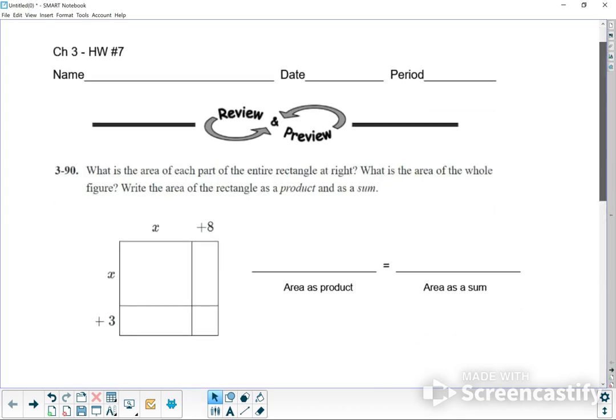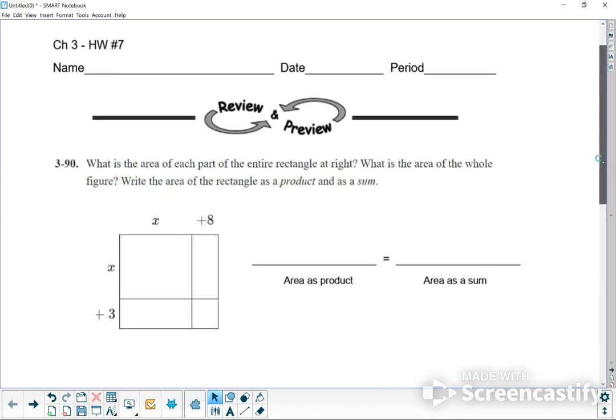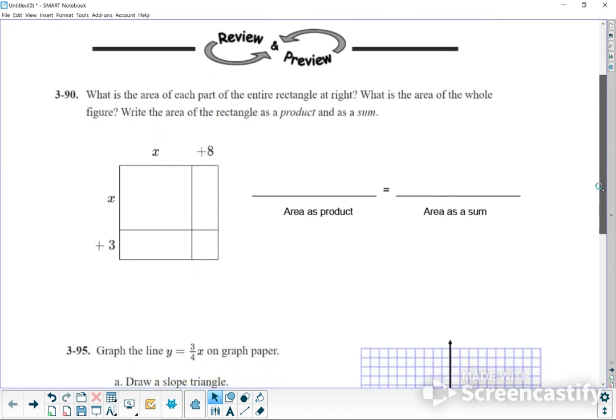All right, welcome. Let's go ahead and do this assignment. This is chapter 3, homework number 7. Number 90, what's the area of each part of the entire rectangle at the right? What's the area of the whole figure? Write the area as a product and write it as a sum.